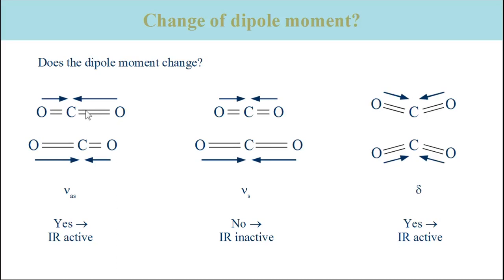We assume that the partial charges do not change during the vibration. Then the dipole moment depends only on the separation between positive and negative partial charge — in other words, on the bond length. It is large when the bond is elongated and small when the bond is contracted. The dipole moments of both bonds add up to the total dipole moment. For the equilibrium structure, the total dipole moment is zero because both bonds have the same length and their dipole moments have the same magnitude but point in opposite directions.